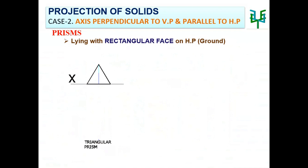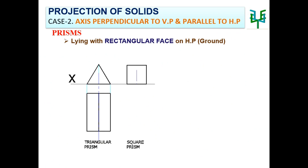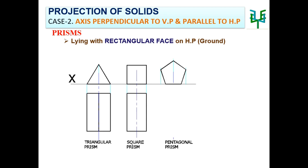Examples of prisms resting on their rectangular face: Triangular prism, Square prism, Pentagonal prism, Hexagonal prism.